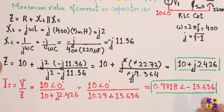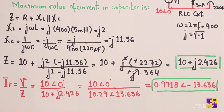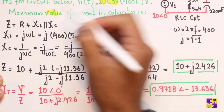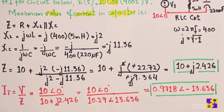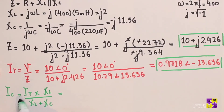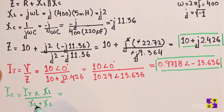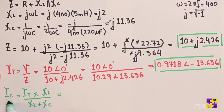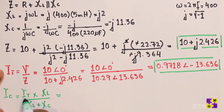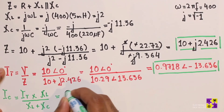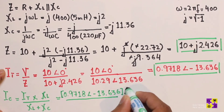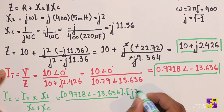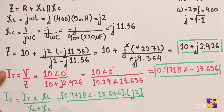Finally, we find the current in the capacitor — the maximum value of current in the capacitor — by applying the current divider. The current divider equation gives us: IC equals total current times XL divided by (XL + XC), which is IT times j2 divided by (j2 + (−j11.36)).